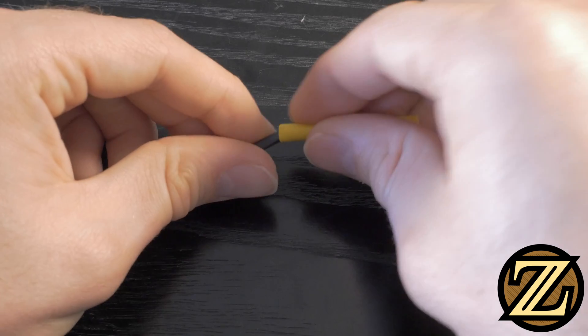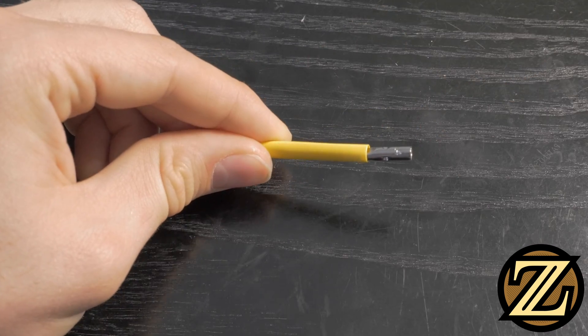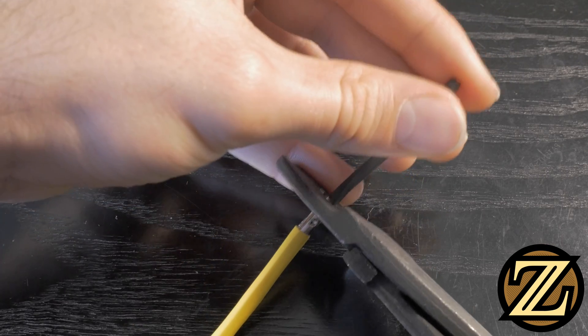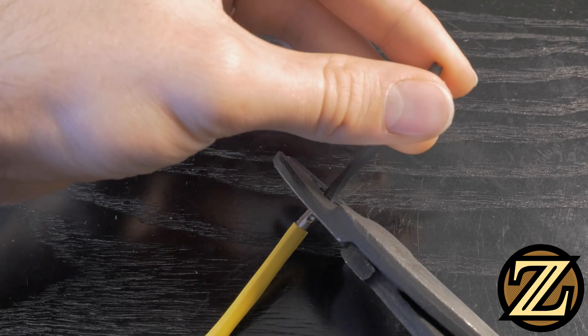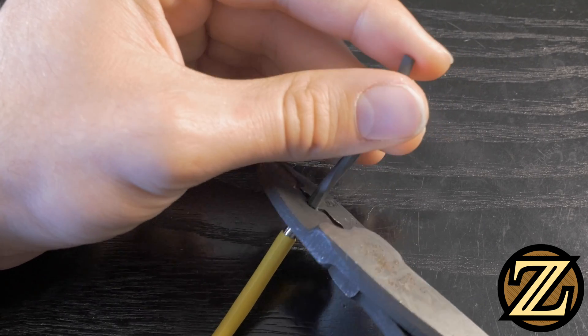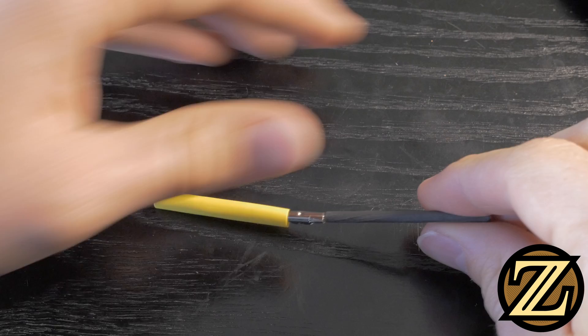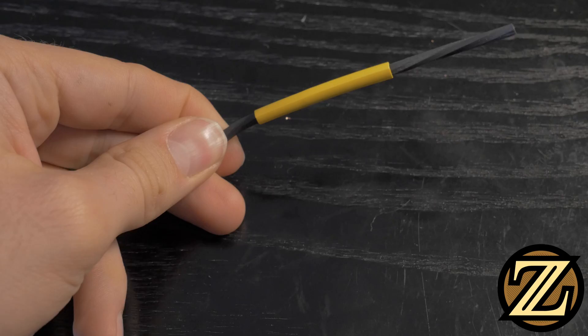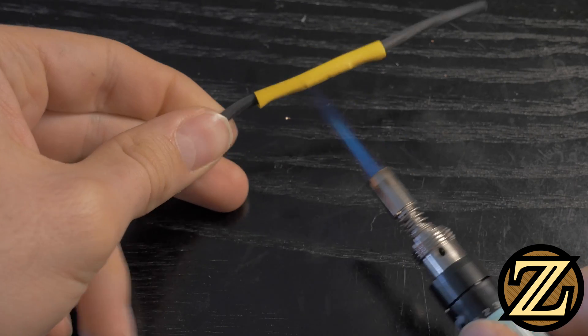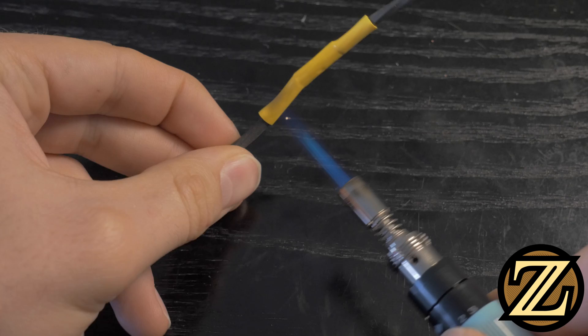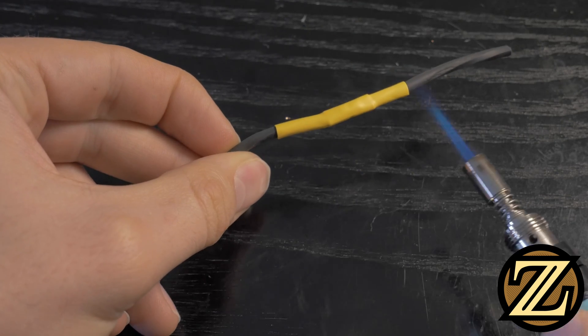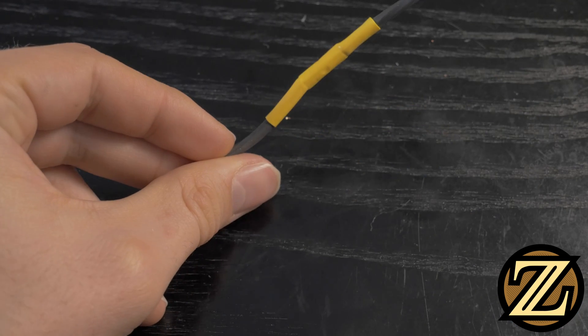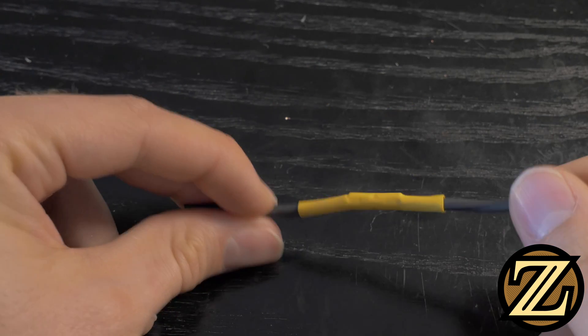At this point, you would want to put the shrink wrap on the splice to protect it. Feed the other wire into the end of the butt splice. Set the splice inside of your tool and give it a crimp. Your two wires are now joined together with an uninsulated butt splice. Bring a heat source to your shrink wrap. And then you're done.